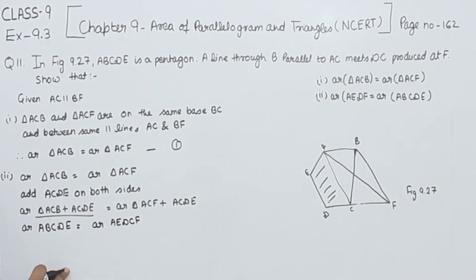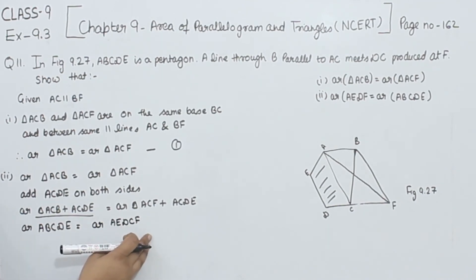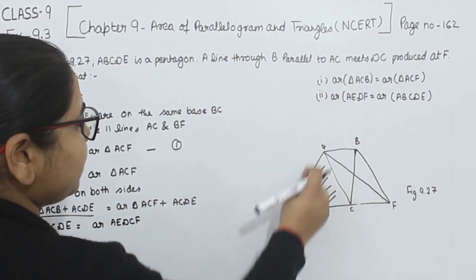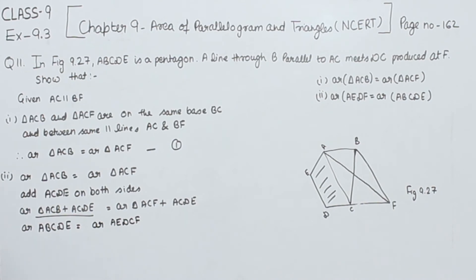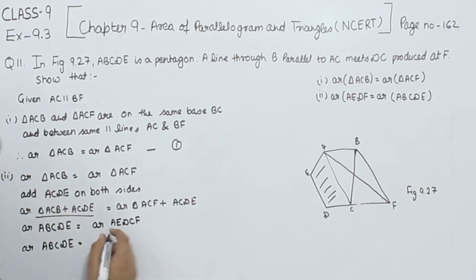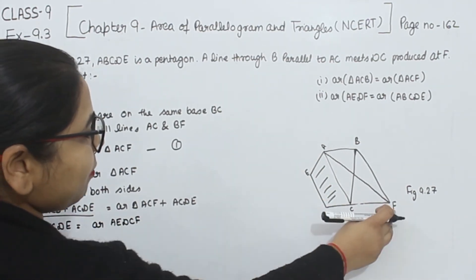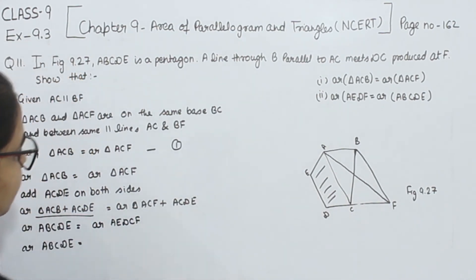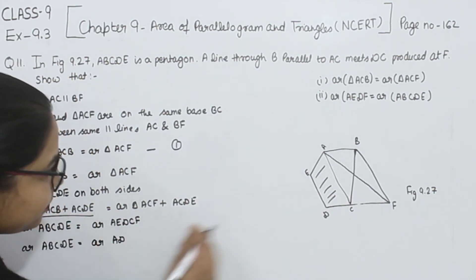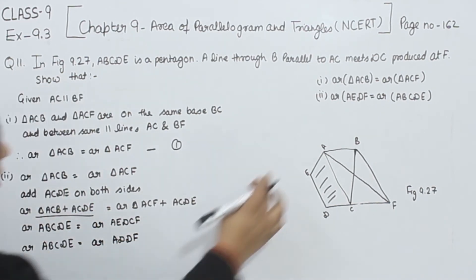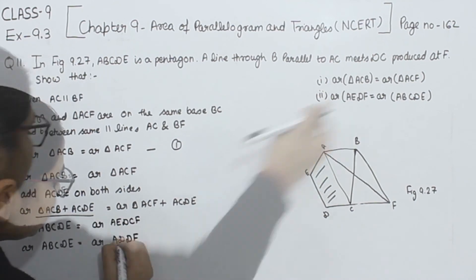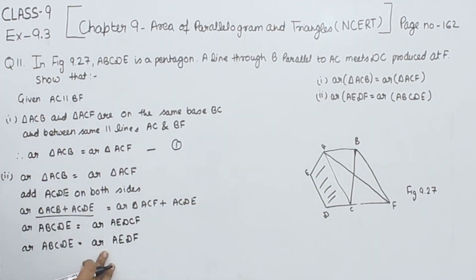Now, the area of AEDCF on the right side can be written as area AEDF. So we get: area of ABCDE equals area of AEDF. This is what we had to prove in part two, and we have proved it.